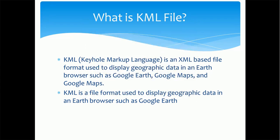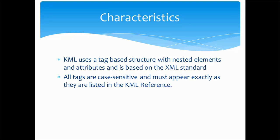KML is a file format used to display geographic data in an earth browser such as Google Earth, where we can locate positions on the earth. What are the characteristics of KML? KML uses a tag-based structure with nested elements and attributes.